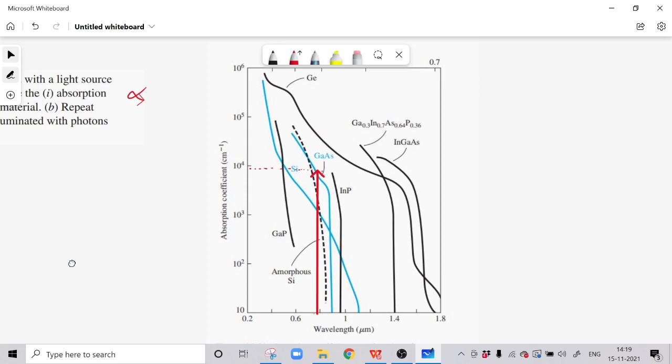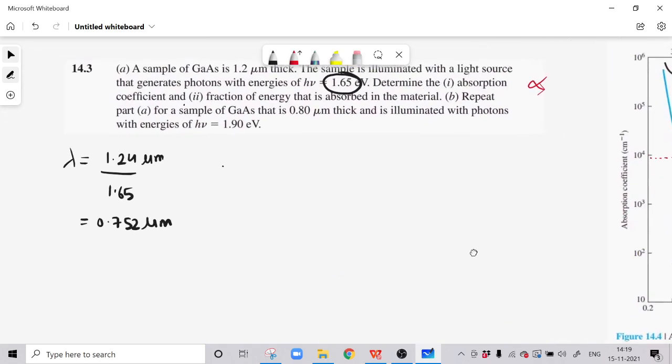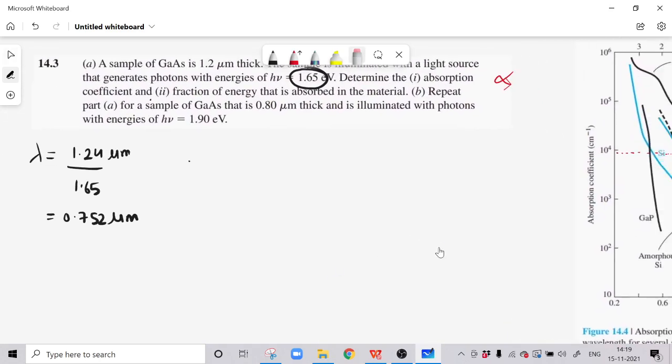From the graph, alpha is equal to 9 times 10 raised to 3 centimeter inverse. Now we will calculate the fraction of energy. For that we will substitute alpha in the equation of intensity. We know that the intensity is given as: